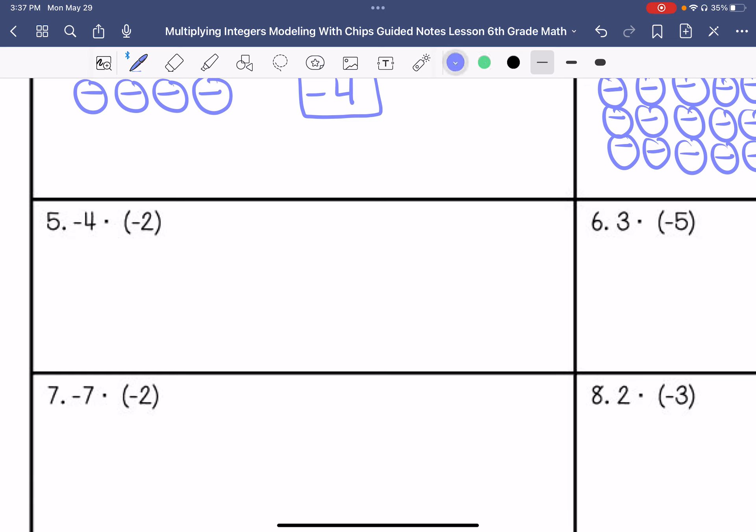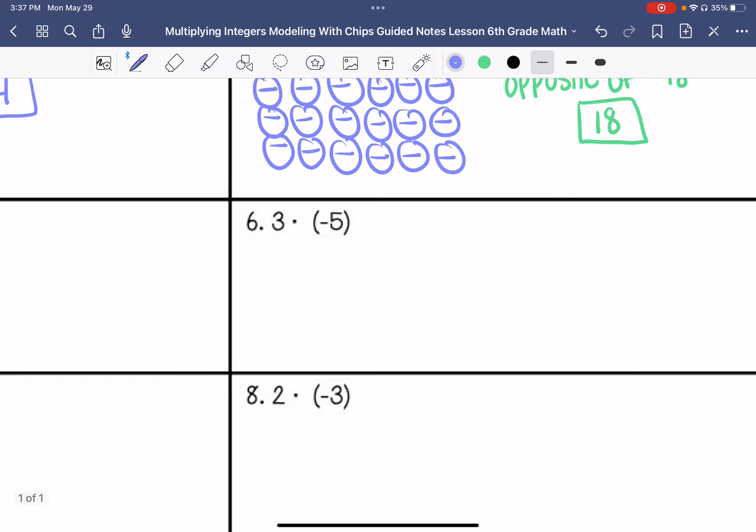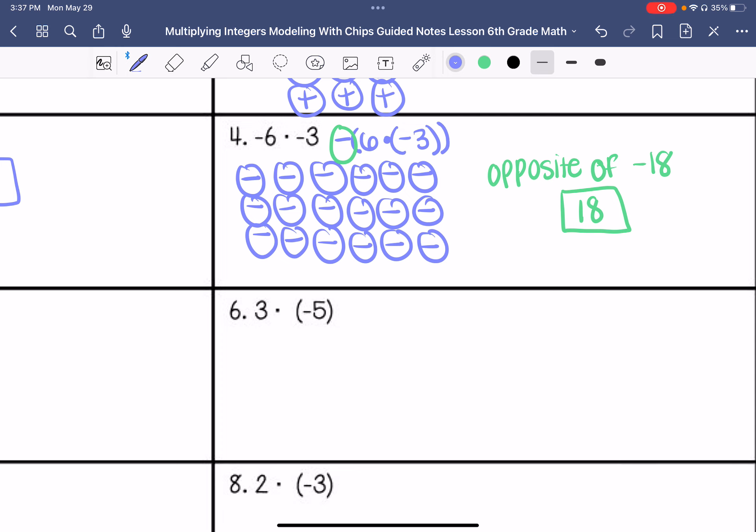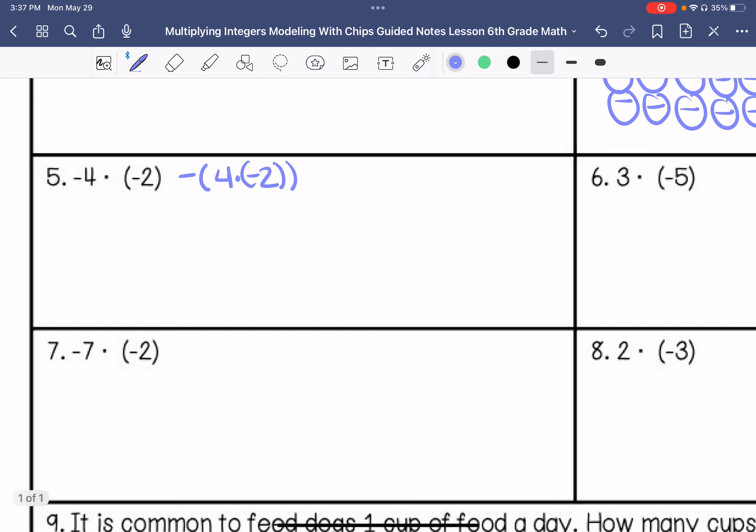Alright, we are going to look at this as the opposite of, I'm sorry, opposite of 4 times negative 2. Let me write this properly over here. Alright, so I'm going to make 4 groups of negative 2. So this ends up being negative 8. And I want the opposite of negative 8, which makes it positive 8 is my answer.